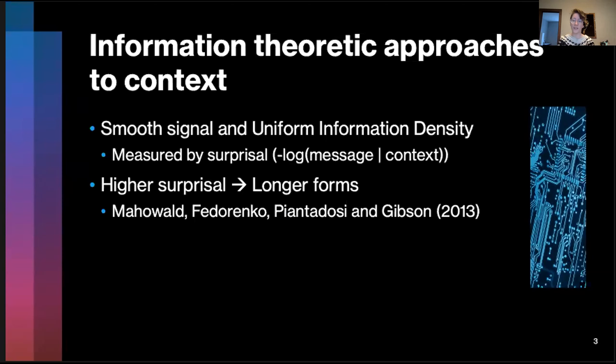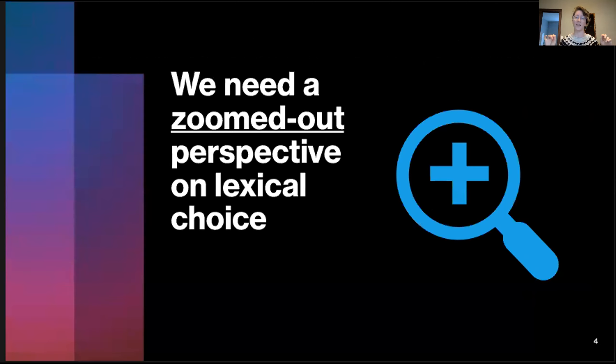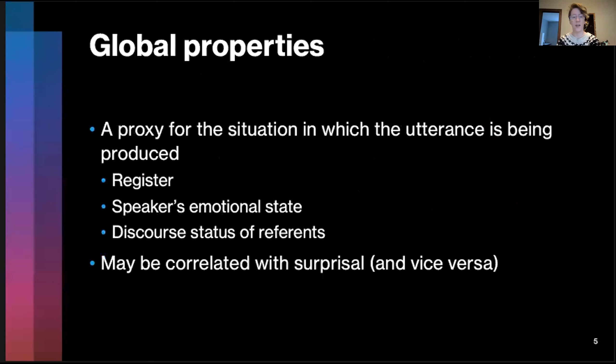Speakers are thought to move between different options depending on the word form, which should mirror the probability of that message that they're trying to convey. Our goal in this study is to follow up on a study by Mawald, Fedorenko, Piantadosi, and Gibson, who looked at the relationship between these information theoretic constraints, specifically surprisal, and lexical selection. We're going to try and zoom out and see these broader effects of discourse-related factors, register-related factors, and local multi-word surprisal effects on lexical choice.